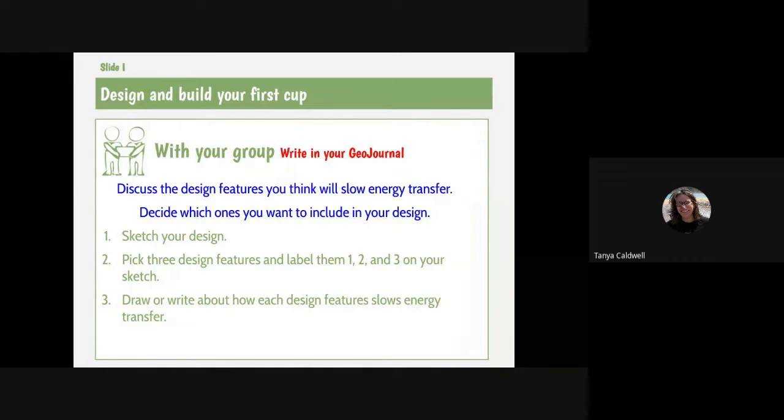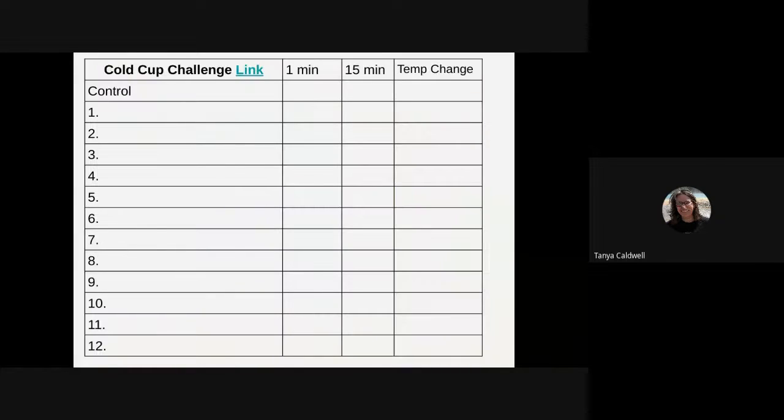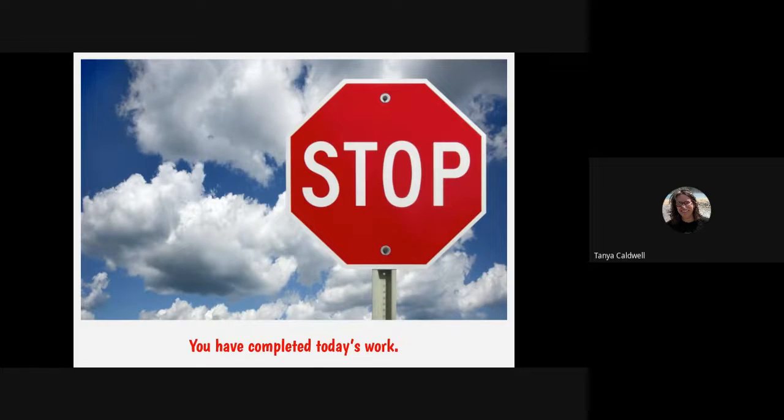Before you get started, your group must discuss the design features you think will slow the energy transfer down. You're going to decide which three items you're going to want to include. Once you've discussed that, you're going to sketch your design in your journal. You're going to put those three items in your journal and label it. And then you're going to briefly talk about how each of those will slow down the energy transfer. So that is day one, designing it and getting your materials and getting started. You will be given this on a later date. That's the end of the first day's work.